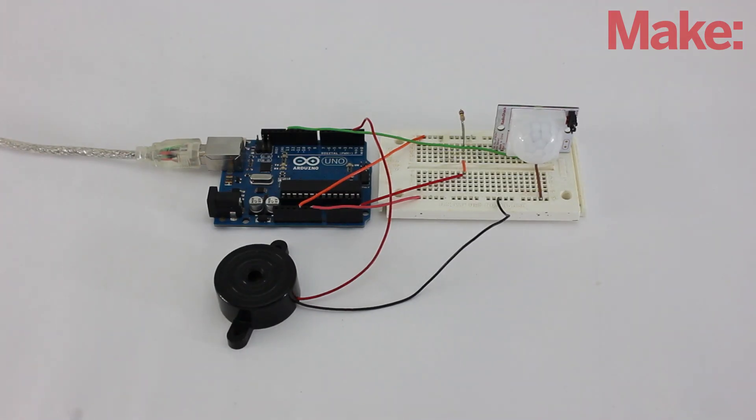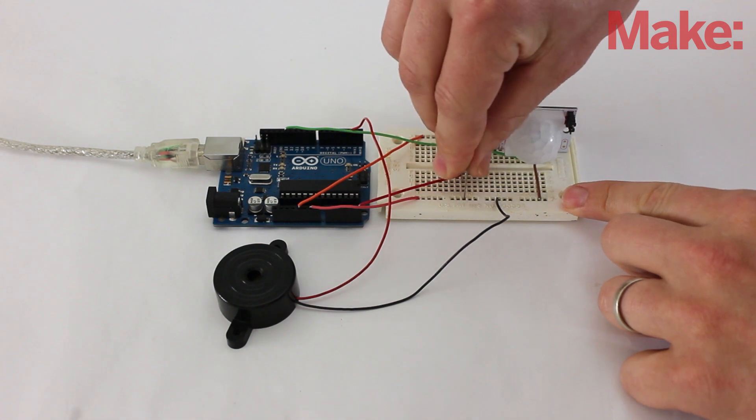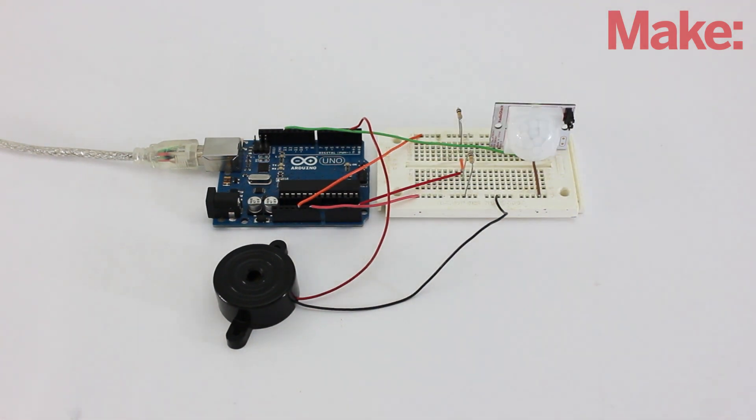Now remove one of the resistors and turn on the power. The system will start up in standby mode. To arm and disarm the system, all you have to do is briefly reconnect the resistor to the breadboard.